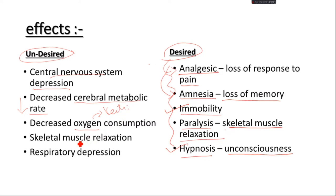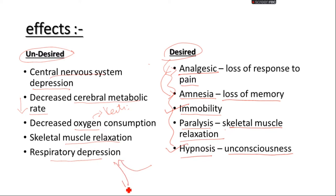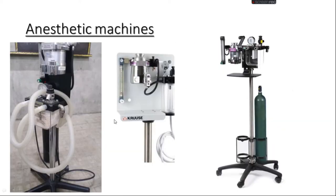Skeletal muscles also become relaxed. Therefore we have to provide the animal with oxygen and also manage carbon dioxide. The inhalational machine is designed so that oxygen is going into the body and carbon dioxide is coming out of the body — that is the system in inhalational anesthetic machines.